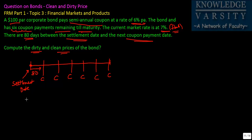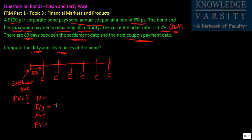Now if you want to find out the price of this bond, you will compute the present value. The factors you have to input are N, I/Y, PMT, and FV. I/Y is the market rate — since it's a semi-annual payment, it will be 7 divided by 2, which is 3.5. PMT: the coupon is 6%, so 6 divided by 2 is 3% of 100, which comes to 3.